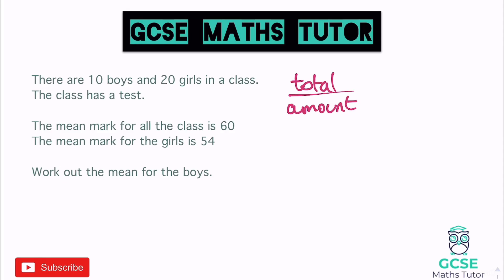When working out a mean, we get the total, divide by how many there are, and we get our mean. In this question, it doesn't give us the total - it tells us what the mean is and the amount. There are 10 boys and 20 girls but no total. So we're going to go backwards to work out these totals - thinking about this in reverse.